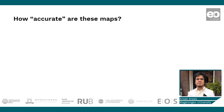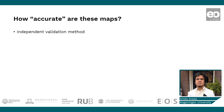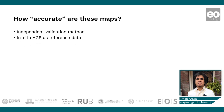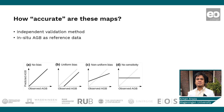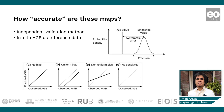But are these maps accurate? A standard important procedure is to validate maps independently, in relation to the accuracy requirements of map users, and given that non-uniform bias or systematic errors are common to AGB maps, as well as imprecision due to random errors.